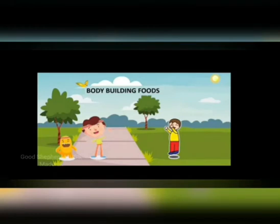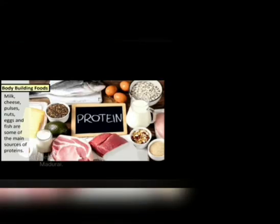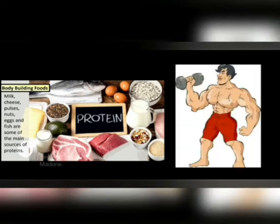Now let us see about body-building foods. Proteins are body-building foods. Protein helps our body to grow. Milk, cheese, pulses, nuts, eggs, fish, mutton and chicken are some of the main sources of proteins. Thus proteins are body-building foods.